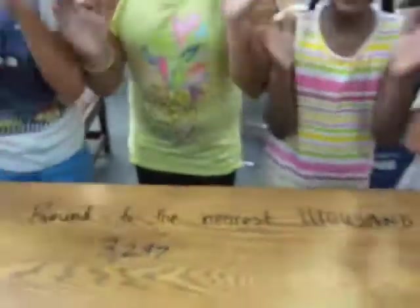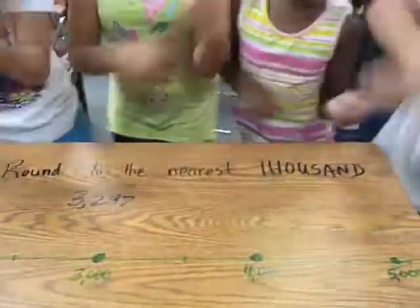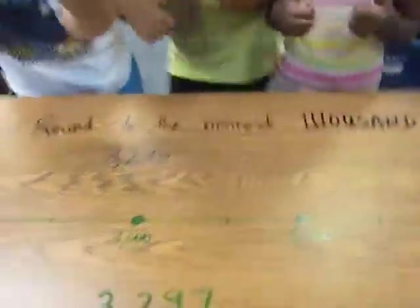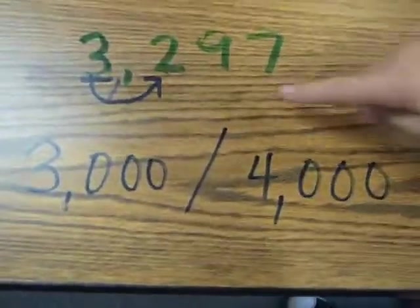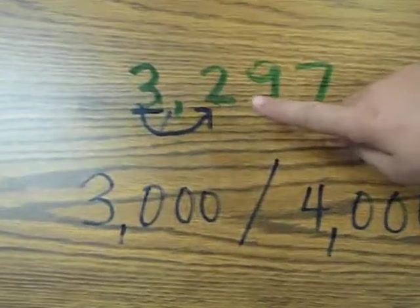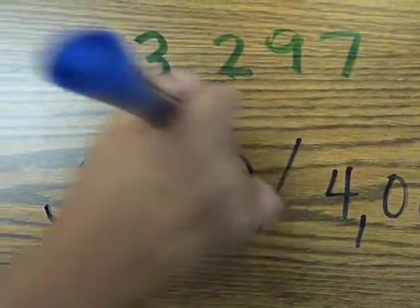If the neighbor is 5 or more, round up! But it's lower than 5, so it has to round down to 3,000.